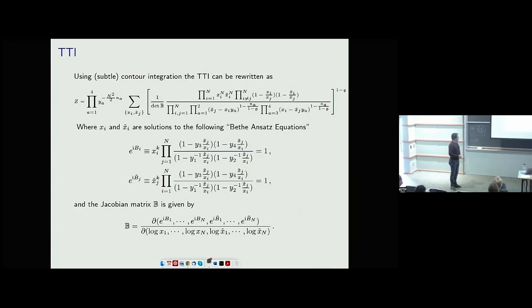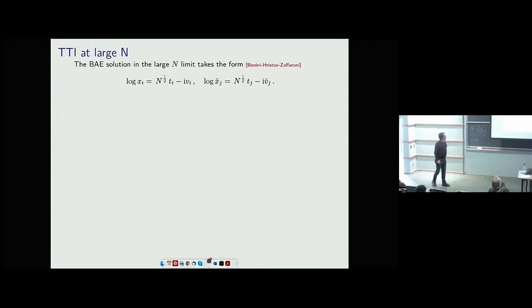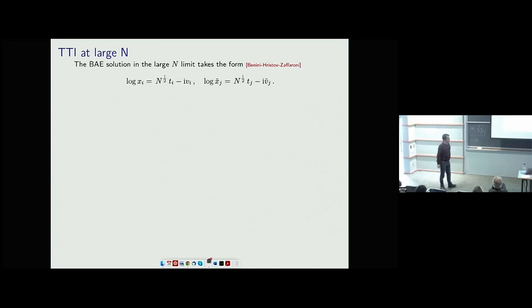There's a Jacobian matrix B whose details are not important. The first thing you can do is apply a saddle-point approximation, which was done by Benini, Closset, and Zaffaroni in a beautiful paper. Their goal was to ask whether this index scales as N^{3/2} — there's evidence from a dual black hole that it must scale this way. Using a certain ansatz for the eigenvalues, they were able to get that scaling.